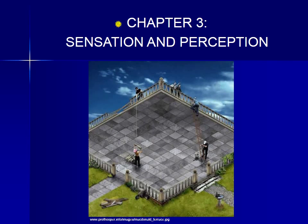This week's lecture content is on Sensing and Perception from Chapter 3. We'll start by having you take a look at an image. What is happening in our brains when we view information that is at odds with what we know about reality?